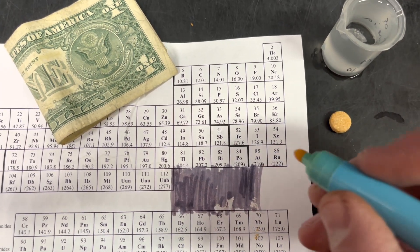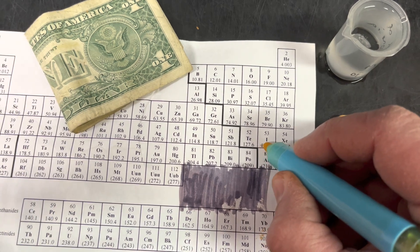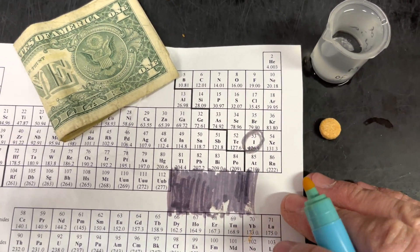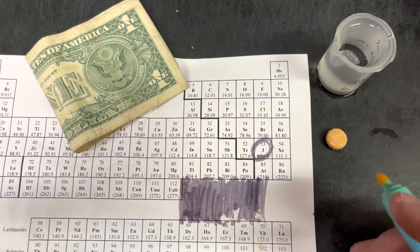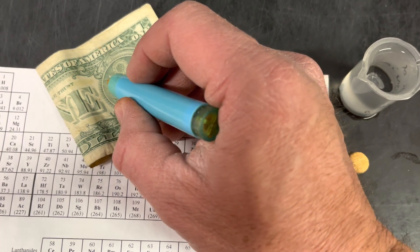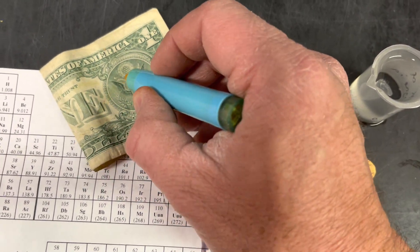I have a special marker here that contains iodine. There's the element iodine in the periodic table. And what this pen is used for is to check the authenticity of dollar bills.